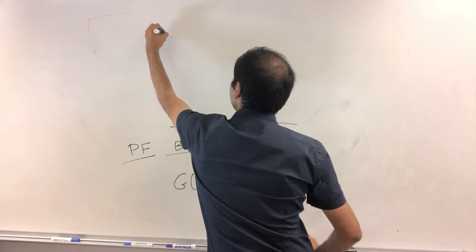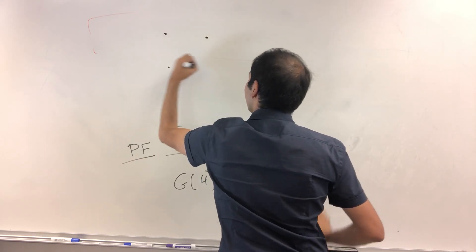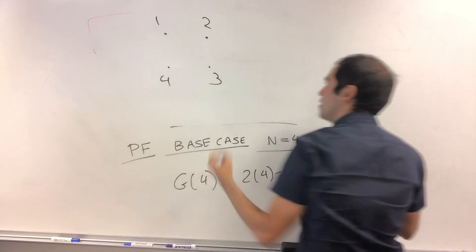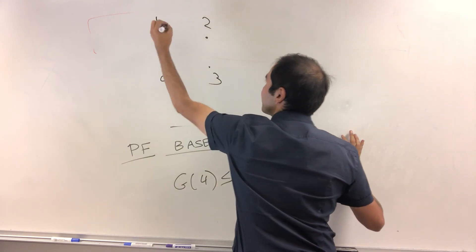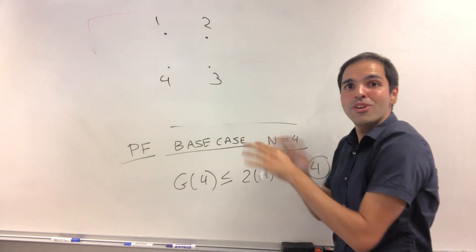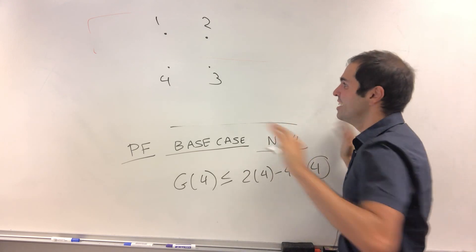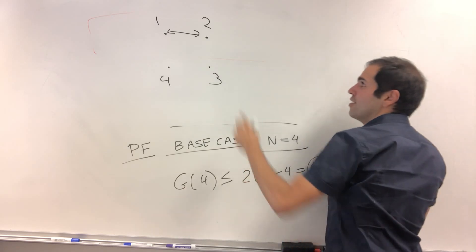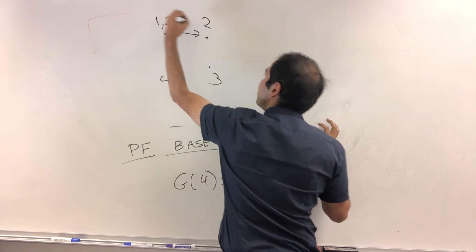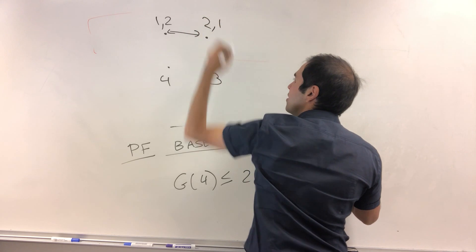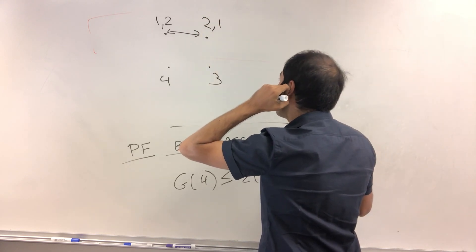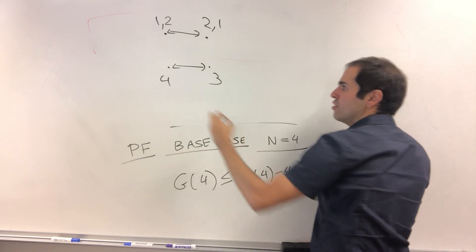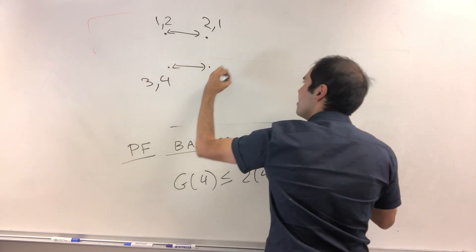So we have four people, one, two, three, four. So let's start with one for instance. And again, that's a beautiful thing. We only need to find one strategy, not really show that it's optimal. First call, one calls two, so one and two, two and one. And then the second call, let's say three calls four, so three and four and three and four.